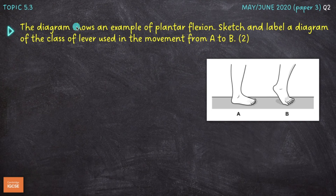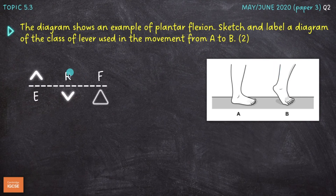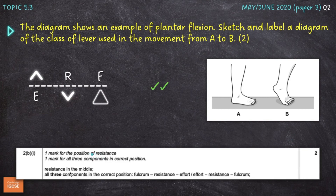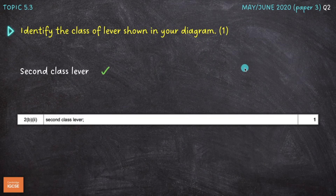The diagram shows an example of plantar flexion — very similar to the diving board example. Sketch and label a diagram of the class of lever used in the movement. Again: fulcrum at the point of contact with the floor between the joints of the toes; resistance from the weight of the body coming down through the middle; effort going upwards from the calf muscles, the gastrocnemius and soleus. Resistance is in the middle, confirming it's a second class lever, with effort on one end and fulcrum on the other. The mark scheme awards two marks for all three components in the correct position, and one additional mark for identifying it as a second class lever.